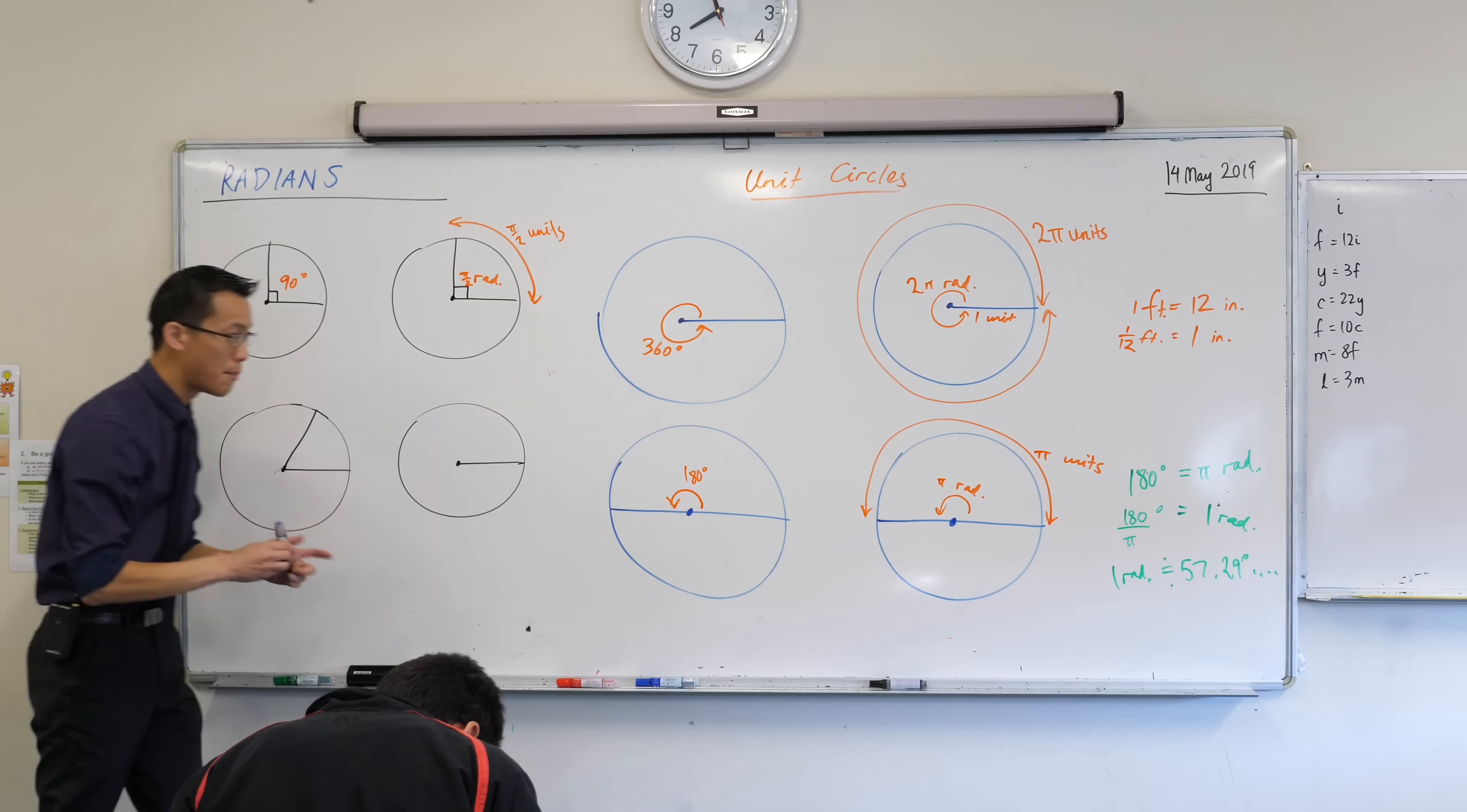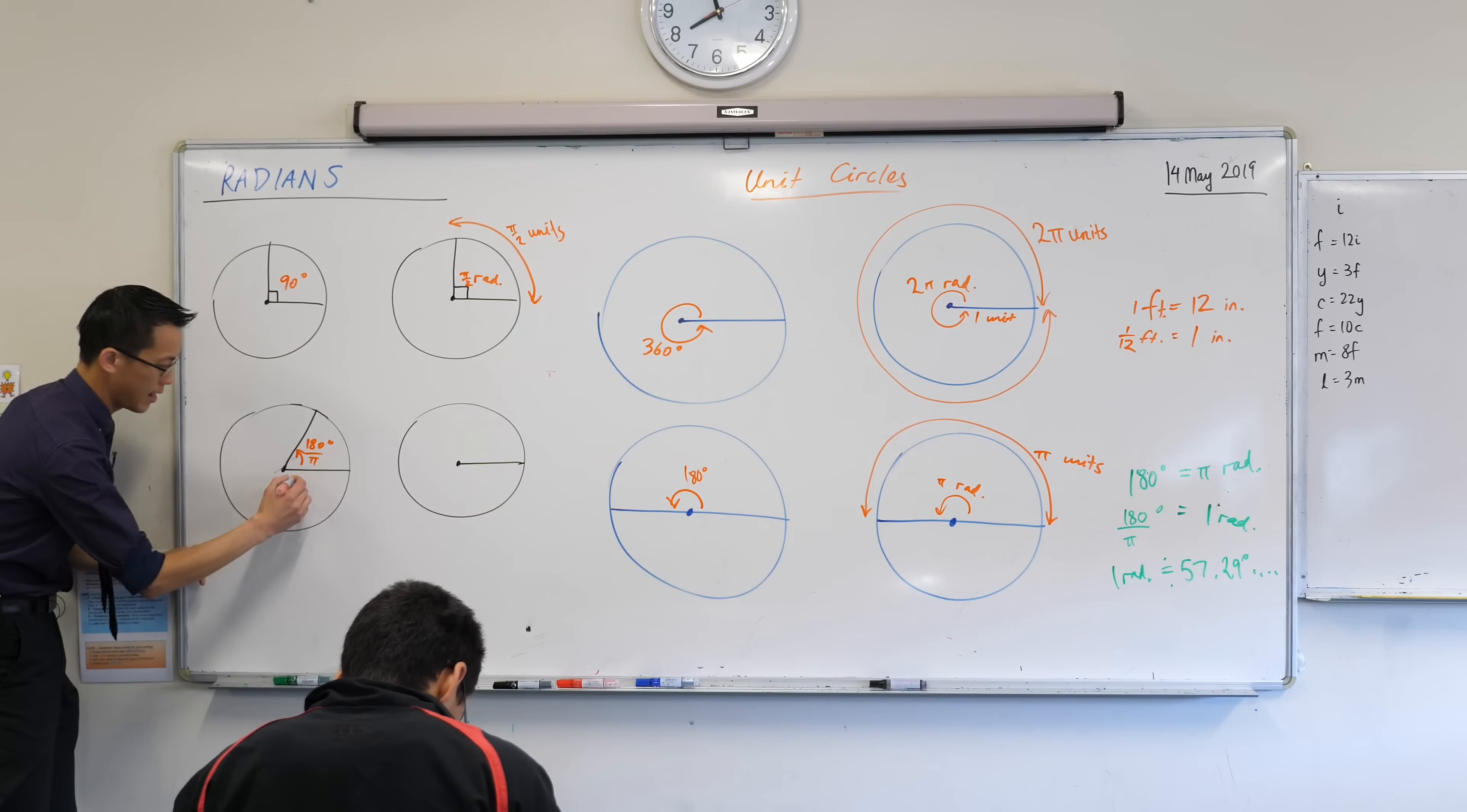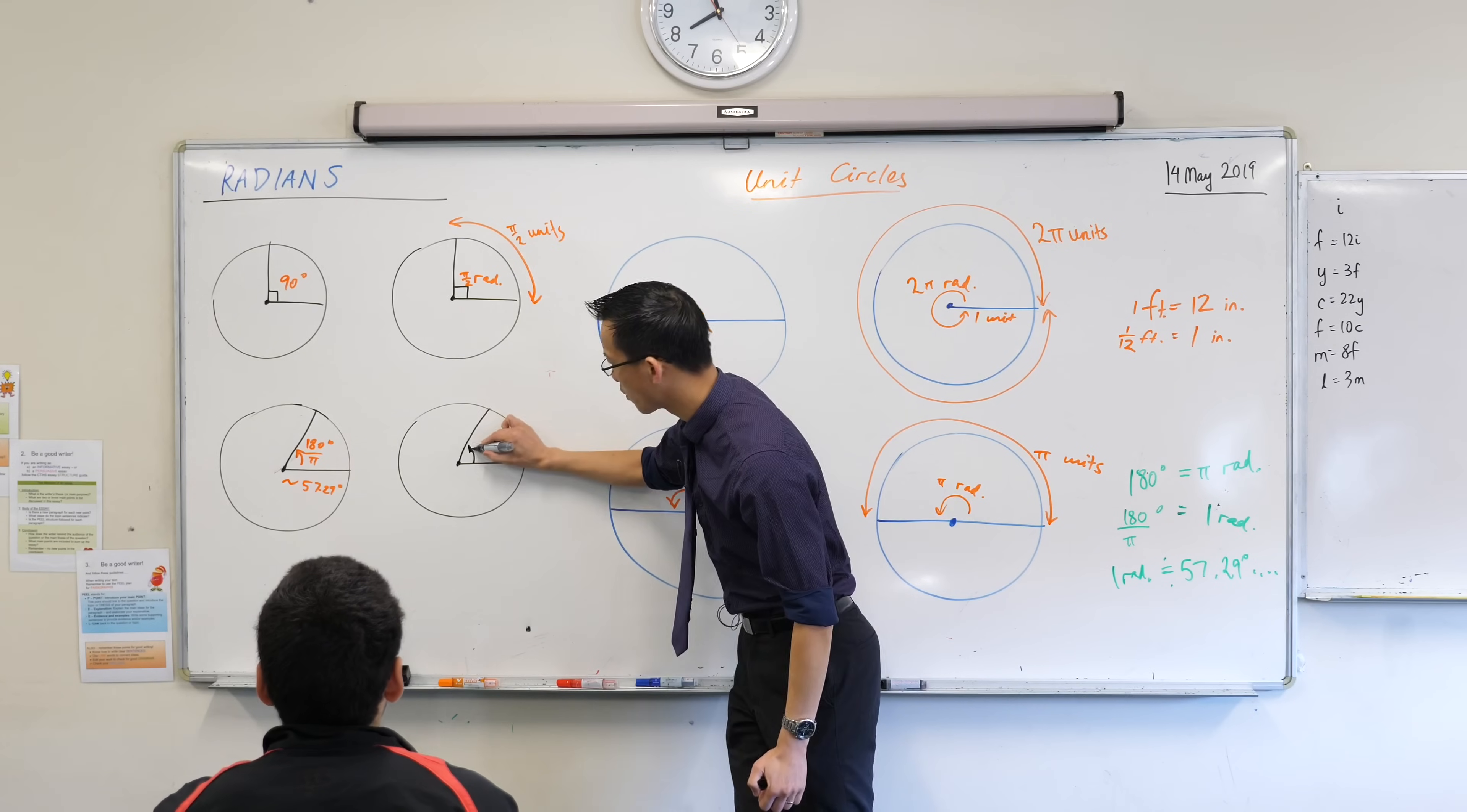So this is about, I'm going to call it about 57.29 degrees. But if I want, you can say that's approximately 57.29 degrees. Okay. Now coming over here, I'm going to draw the same angle, roughly. And what did I say that was in radians? What was the angle we were trying to work out?